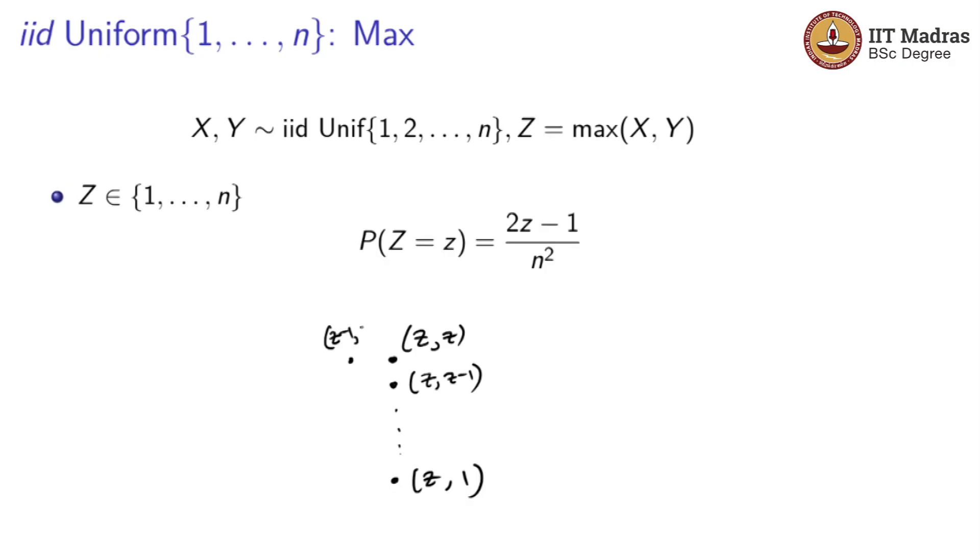On the left you will have z minus 1 comma z all the way down to 1 comma z. You have z minus 1 of them here, z here, you have another z minus 1 here. The total is 2 times z minus 1 plus 1 plus this 1 guy, and that is 2z minus 1. That's how I got the count here.